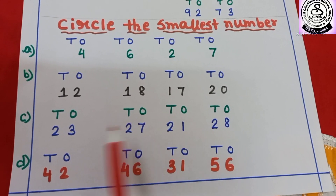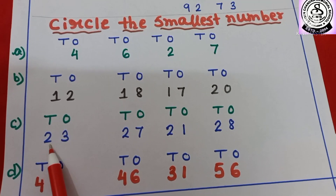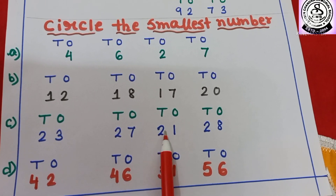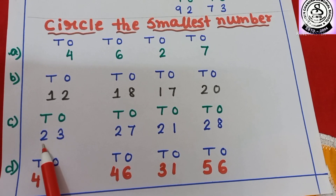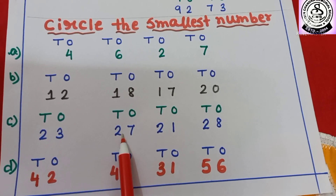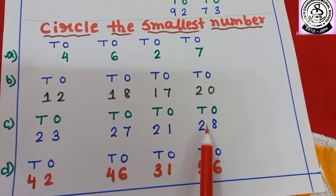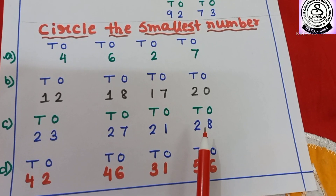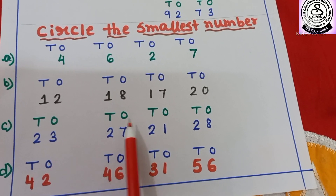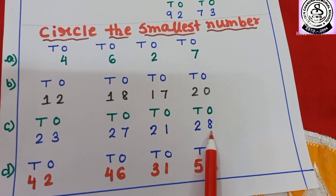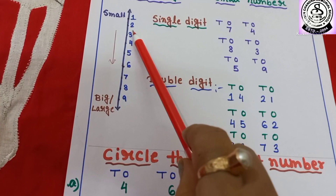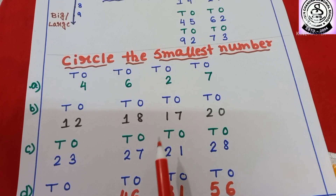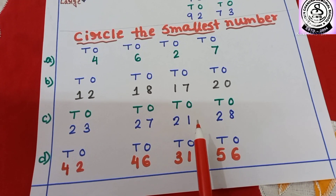Number C: here I have written two digit numbers — 23, then 27, 21 and 28. You have to compare first digit numbers. Here also 2, here also 2, here also 2 and here also 2. So that time you have to compare with the second digit numbers. The second digits are 3, 7, 1 and 8. Counting: 1, 2, 3, 4, 5, 6, 7, 8, 9. Obviously 21 is the smallest number. You have to circle it.